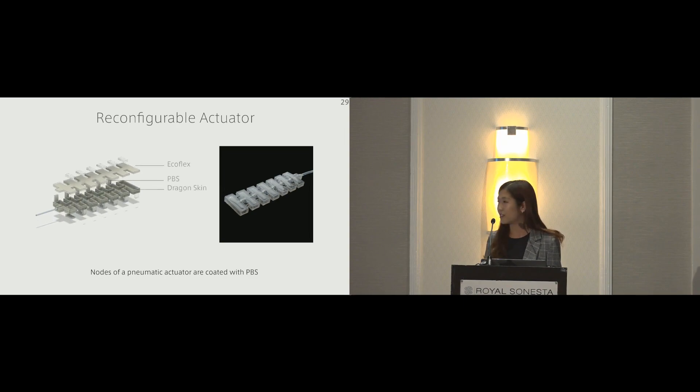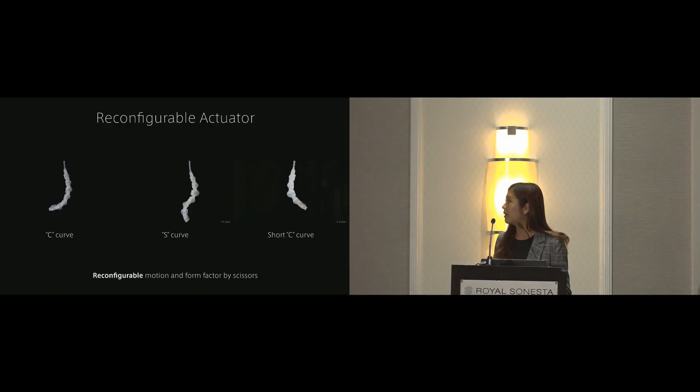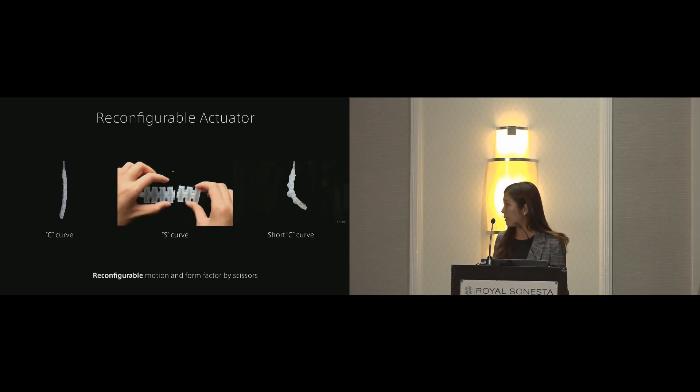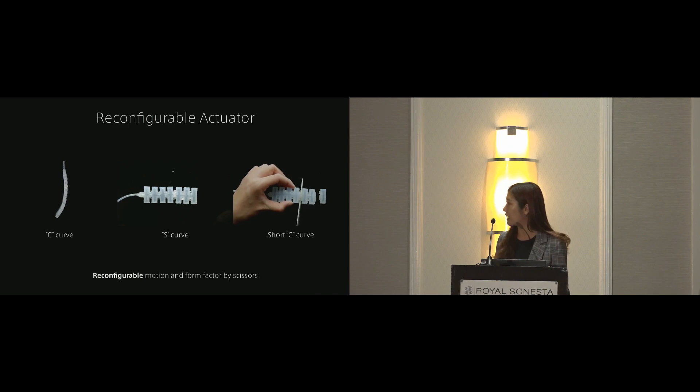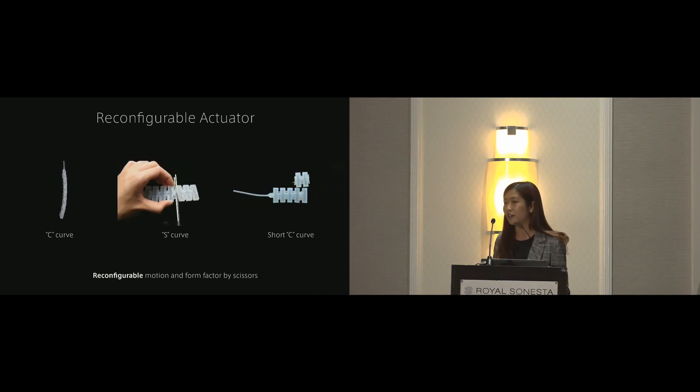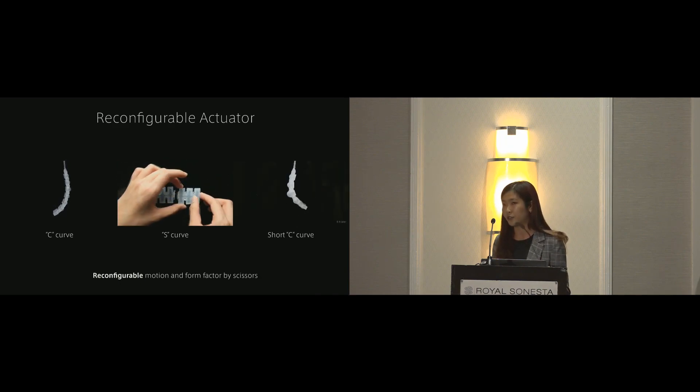Our next application is a reconfigurable actuator. The body of this actuator is made out of Ecoflex, Dragon Skin, with the joint parts coated with PBS. Originally, this actuator will give us a bending curve. If you cut this tail, flip it around, reattach it, and let it heal for a while, you could get an S curve out of the same actuator. In the third column, we show we can get a short version for this bending curve by removing part of this actuator.